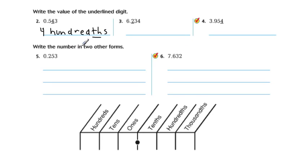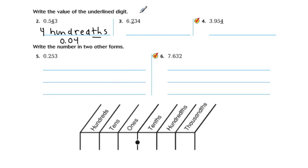If you wanted to represent that in standard form, in numbers, it's 4 in the hundredths place. Either one of those answers — 4 hundredths or 4 in the hundredths place as standard form — is going to work fine. All right, here's number 3.